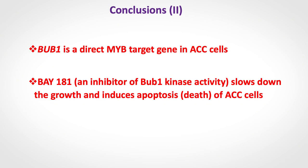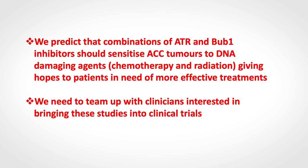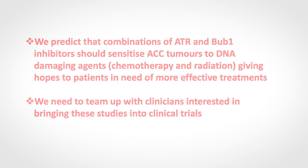In conclusion, BAB1 is a direct MIB target gene in ACC cells. The Bay181 inhibitor slows down and induces apoptosis of an ACC cell line in vitro. We predict that combinations of ATR and BAB1 inhibitors should sensitize ACC cells to chemotherapy and radiotherapy, giving more treatment opportunities to patients who are clearly in need. We now need to team up with clinicians interested in bringing these studies into clinical trials.